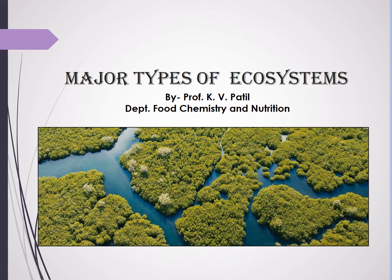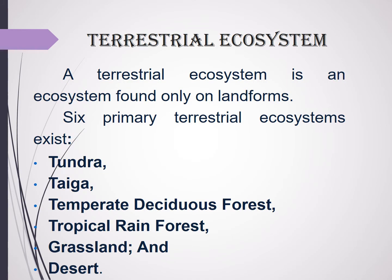Welcome all of you. Today we will discuss about major types of ecosystems. Basically there are two main types of ecosystem: terrestrial ecosystem and aquatic ecosystem.